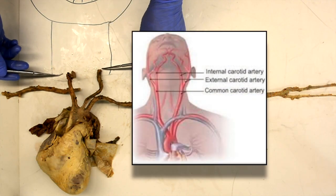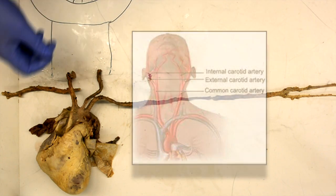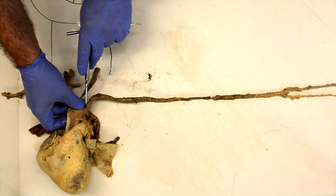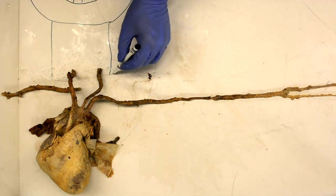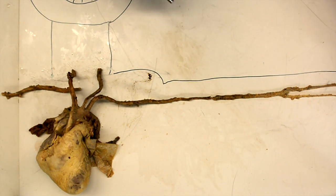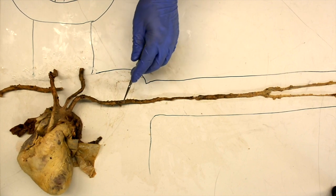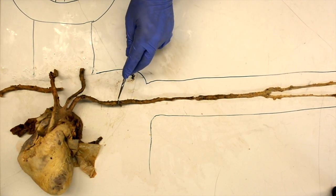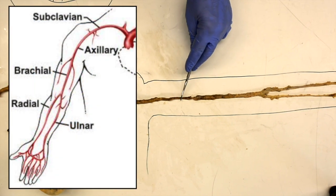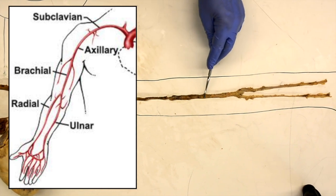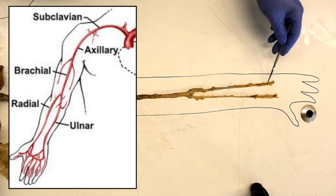The brachiocephalic trunk then divides into the right subclavian and the right common carotid. The two common carotids then branch to form the internal and the external carotid arteries. The left subclavian travels across the torso, and when it passes the lateral border of the first rib, it becomes the axillary artery. It then passes through the axillary region to become the brachial artery, which splits into the radial artery and the ulnar artery.